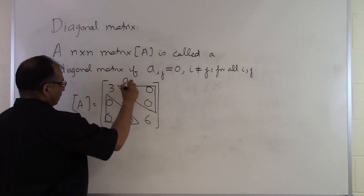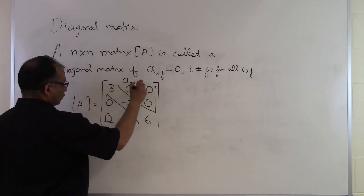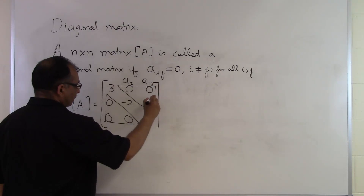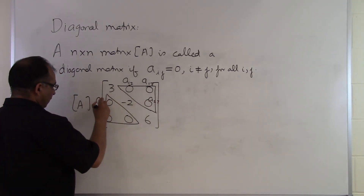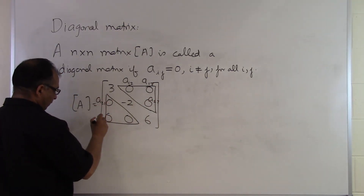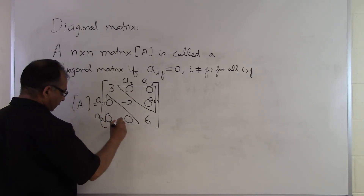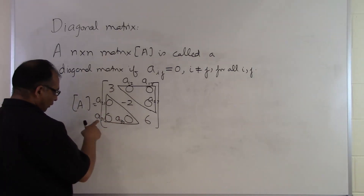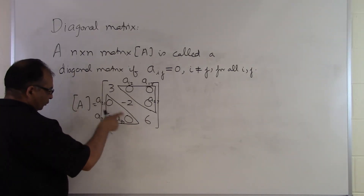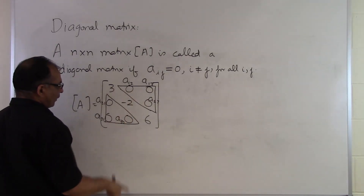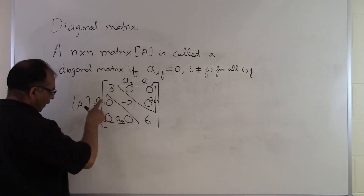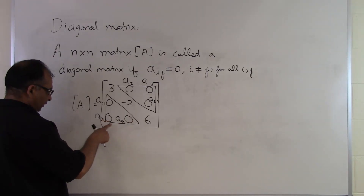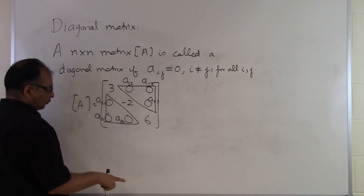For example, this is A12, this is A13, this is A23, this is A21, this is A31, this is A32. In all of these elements which you are finding to be zero, you find that the row number is not the same as the column number. So for every element where the row number is not the same as the column number, they have to be zero.